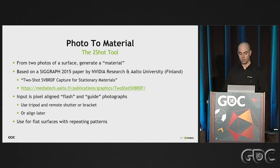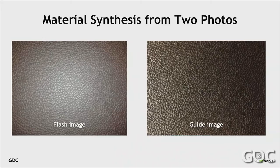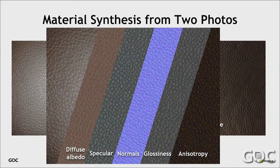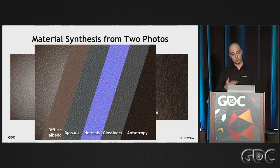The first tool is called TwoShot — a material synthesis tool that takes two photos of a flat surface and pulls material information from them. You take a flash image and a guide image with no flash. These are pixel-aligned and run through the algorithm, giving you a BRDF, diffuse, and basically all surface information. It's great for lifelike games, architectural simulations, or interior design where you need an accurate surface representation.